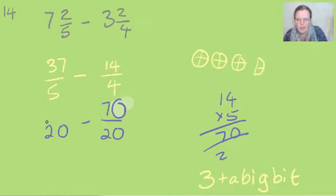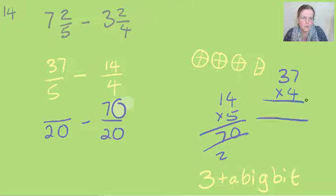So that's 70. And now multiply the bottom by four, multiply the top by four. I'm not even going to try doing that in my head. Times four: seven times four is 28, three times four is 12, and two is 14.